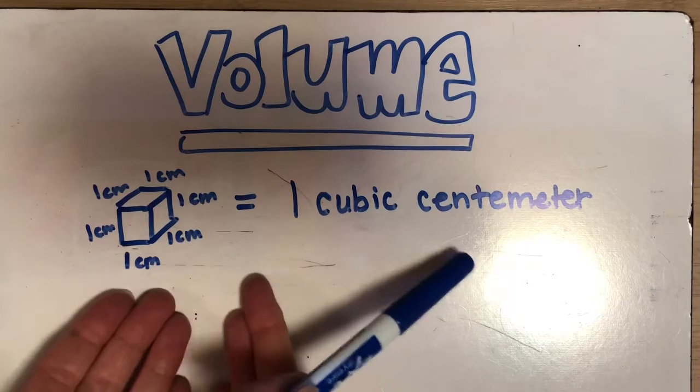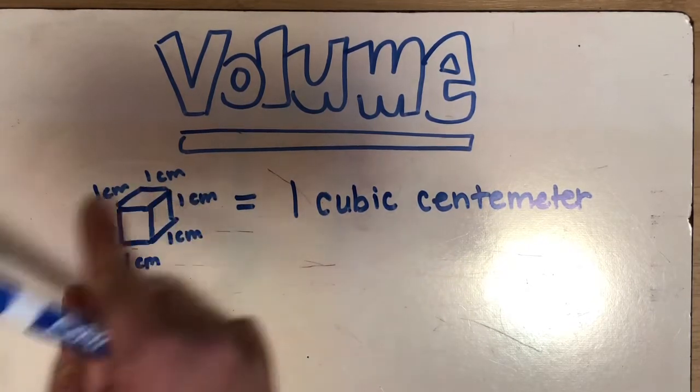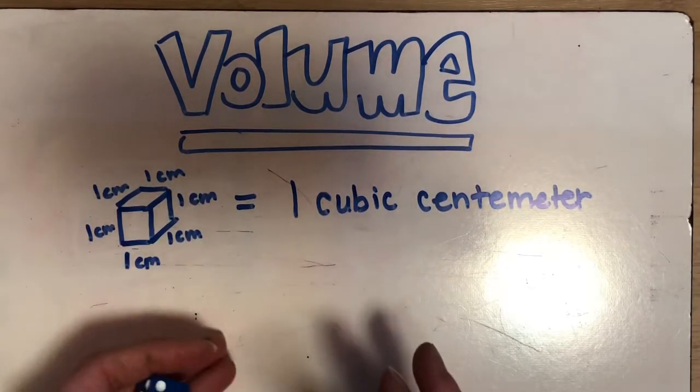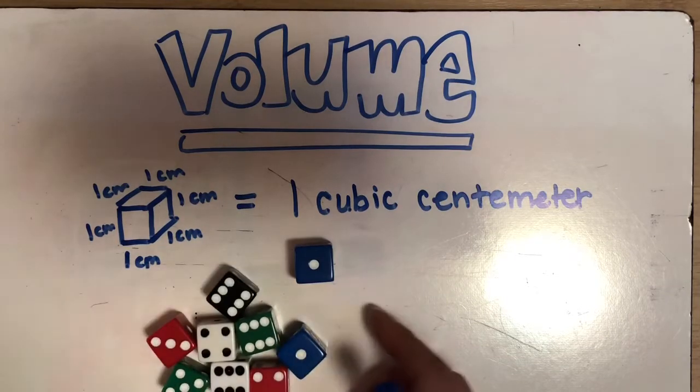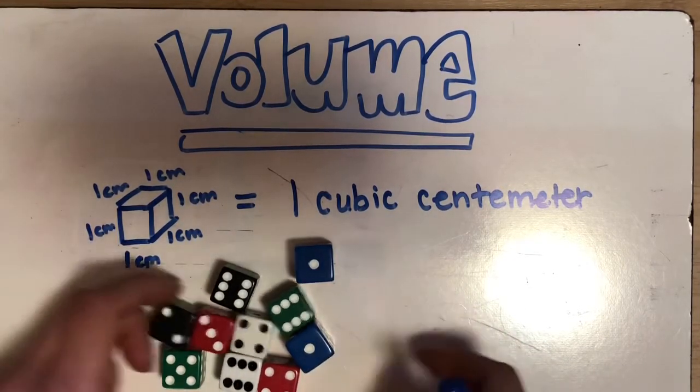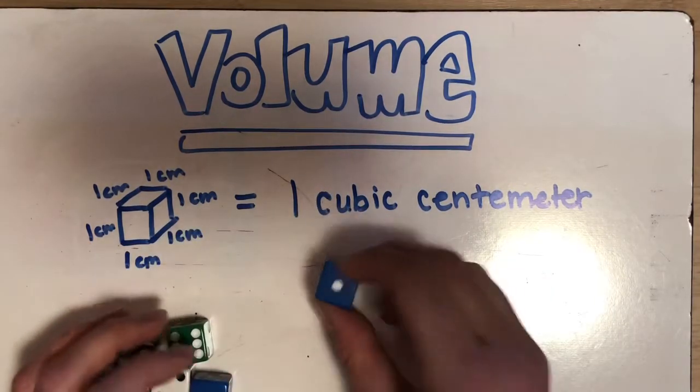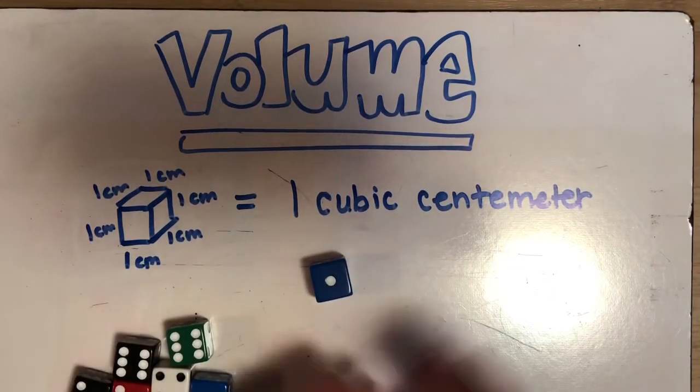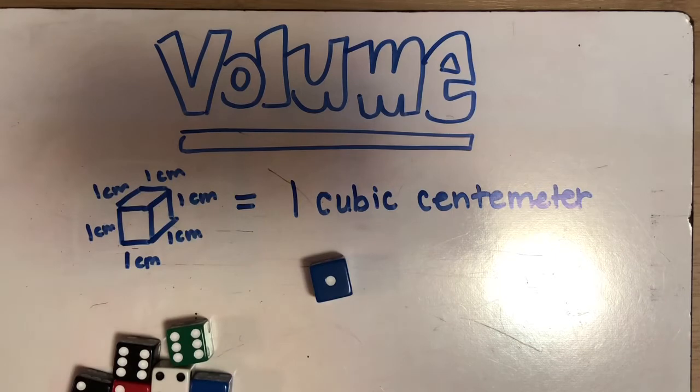What I start with is a unit cube. A unit cube is a cube that is one centimeter on every single side. Now all these dice that I have are very similar. They're obviously different colors, but they're the same exact size. So if I have one die, this equals one cubic centimeter.